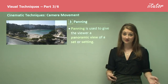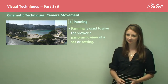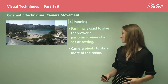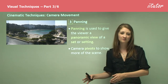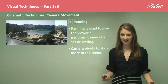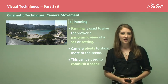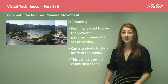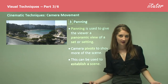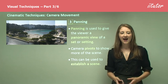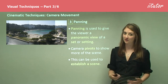Panning is another technique very similar to this. Panning is used to give a panoramic view of a set or setting, where the camera pivots to show more of the scene, capturing different elements that are important. This can also be used to establish a scene, often working with an extreme long shot at the beginning to show things at scale — for example, seeing mountains as the camera moves across them.